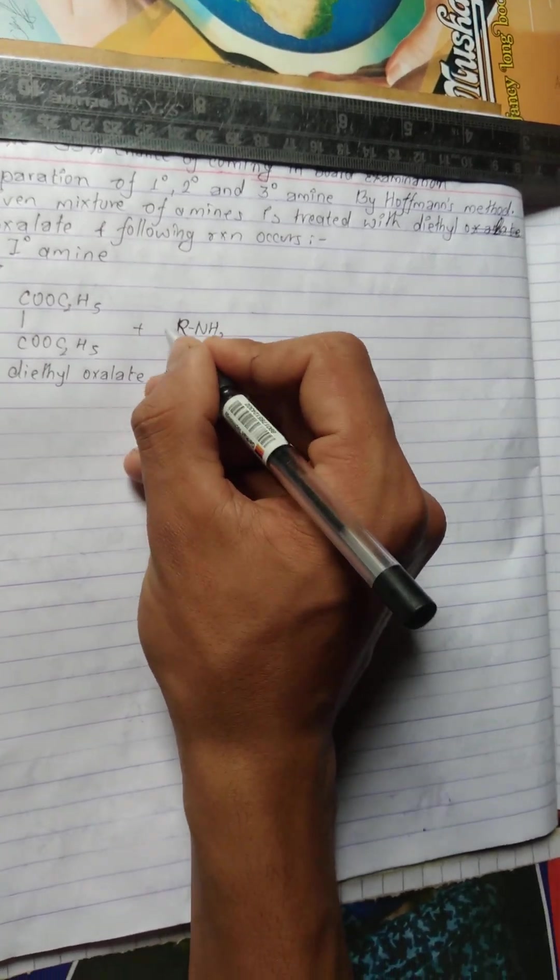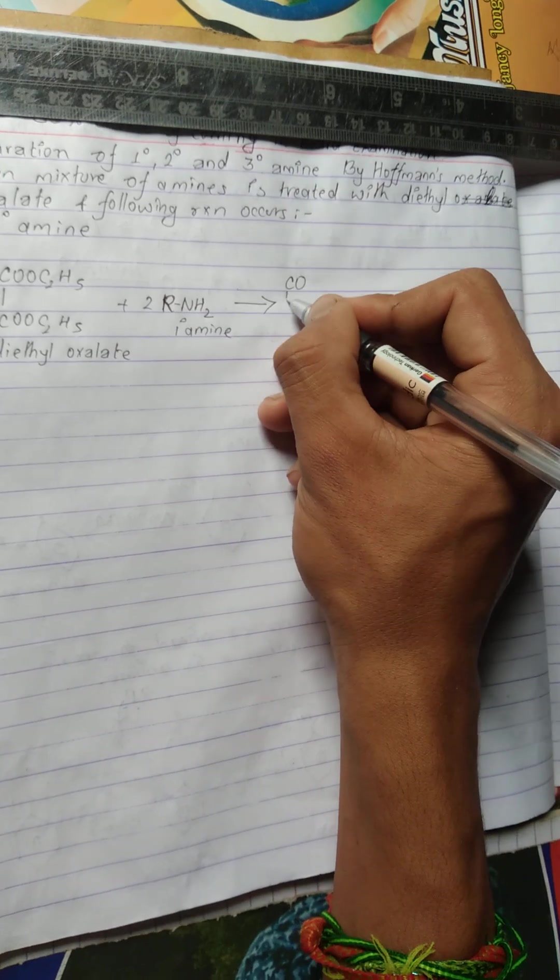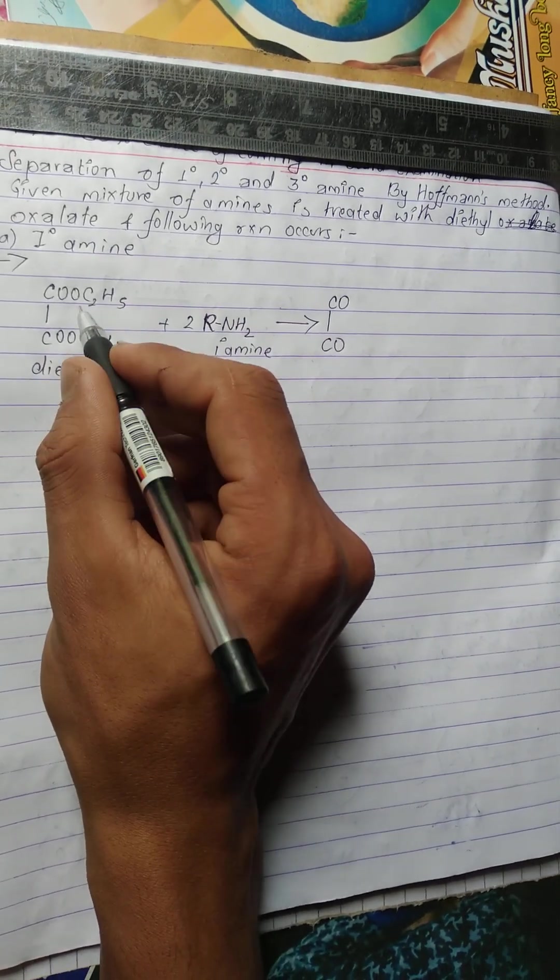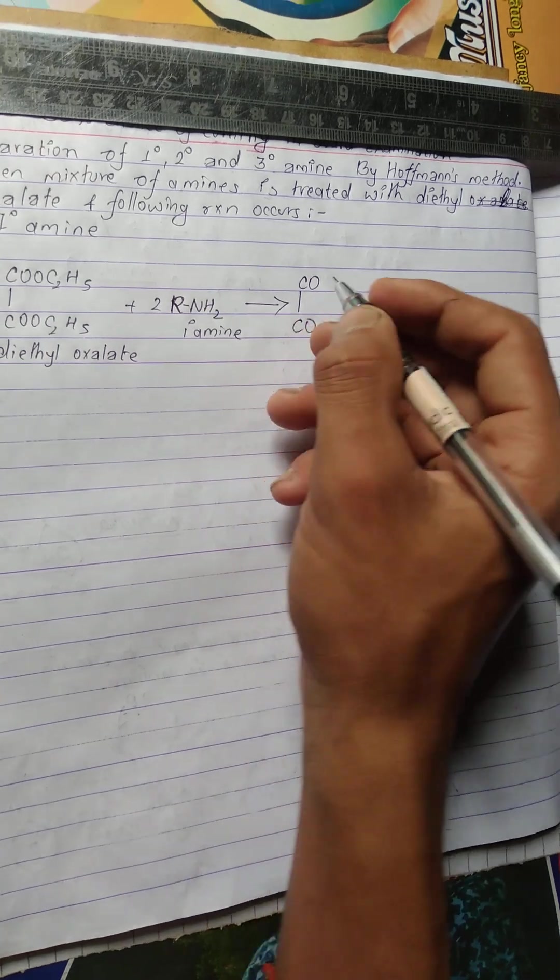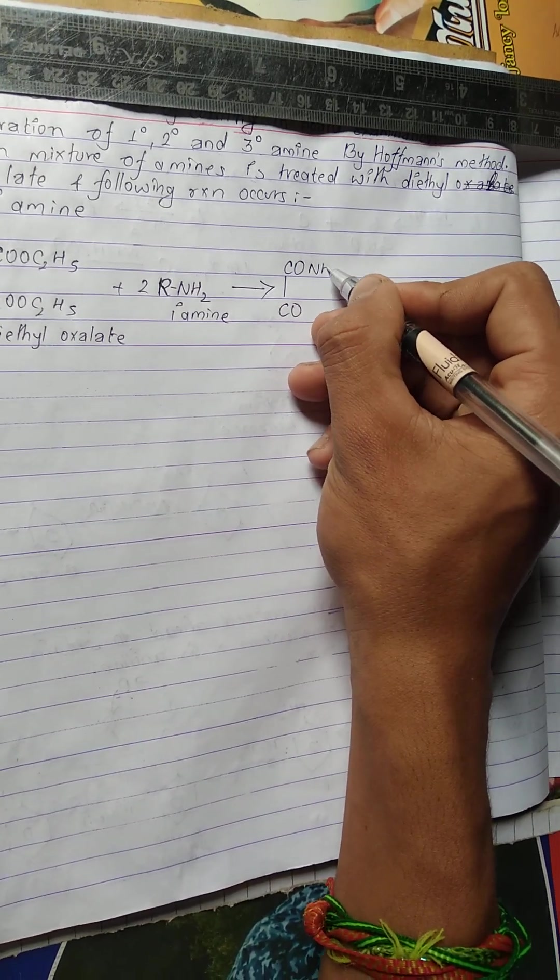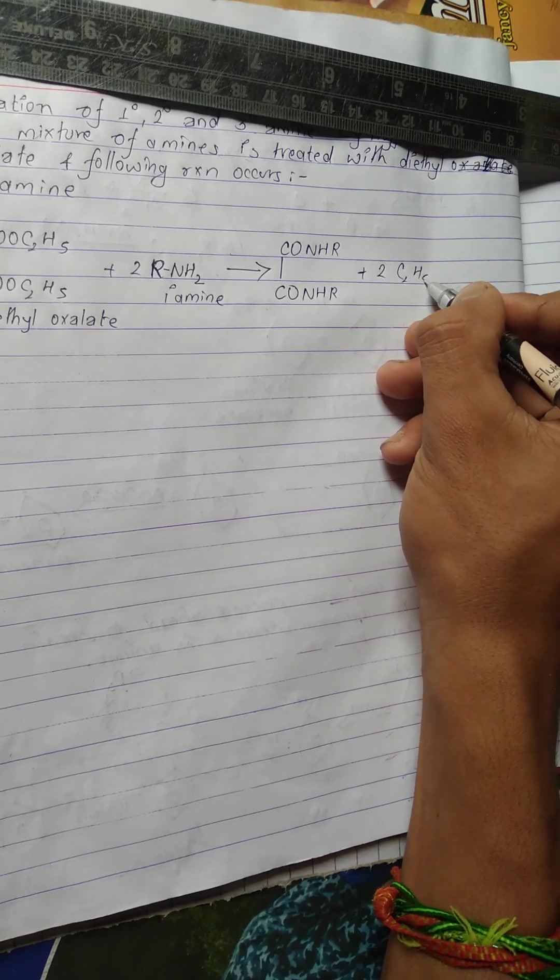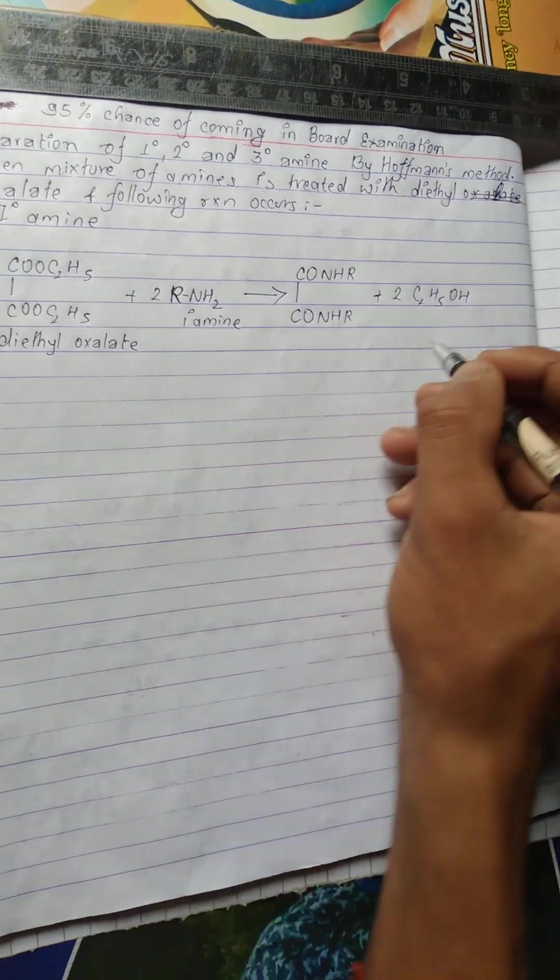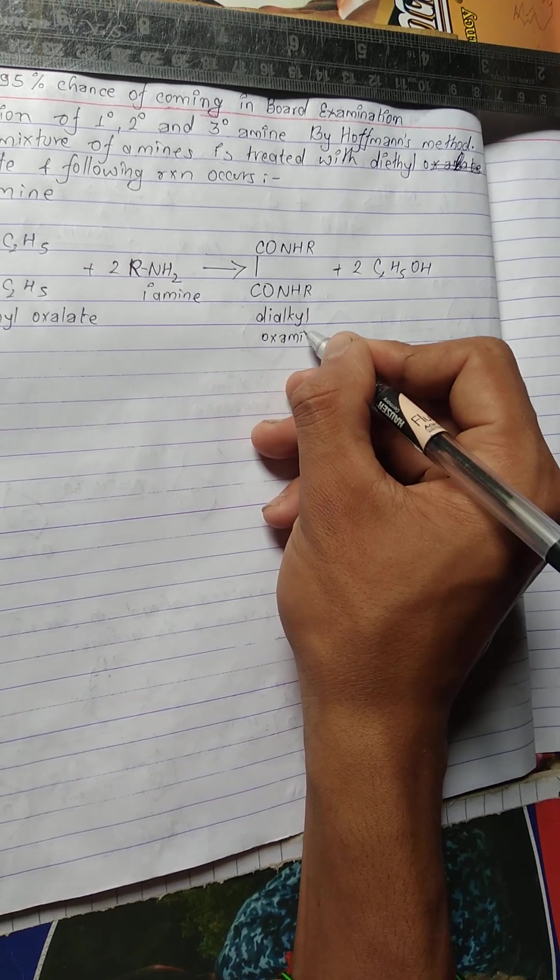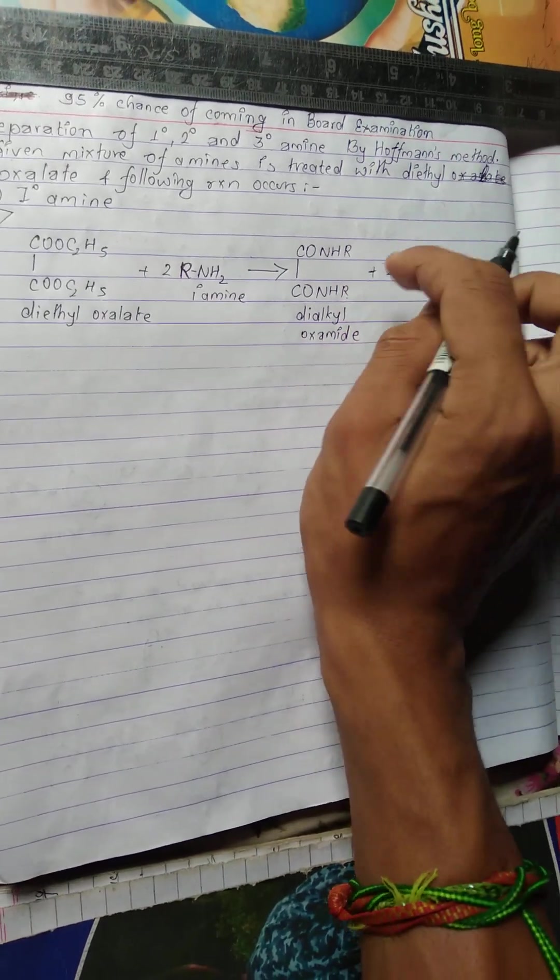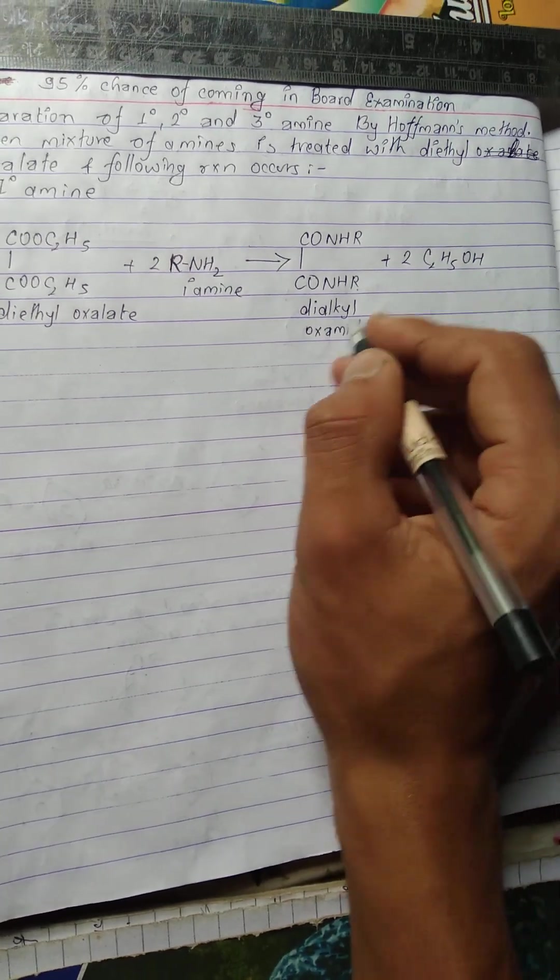Simply, the one degree amine R-NH2 reacts with diethyl oxalate C2H5-O-CO-CO-O-C2H5 to form R-NH-CO-CO-NH-R plus ethanol. This dialkyl oxalate product is a solid. The carbonyl group replaces the hydrogen on the amine.